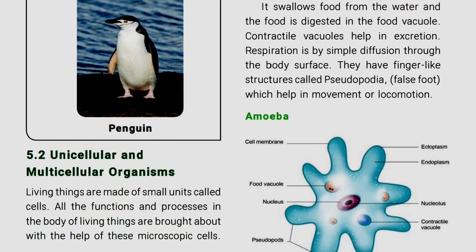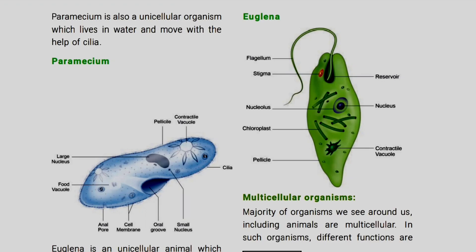This is Paramecium. Paramecium is also a unicellular organism which lives in water and moves with the help of cilia. All body activities are carried out by this single cell. This is the cilia structure.